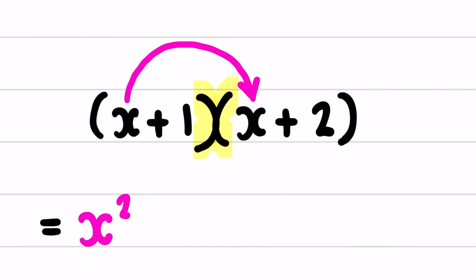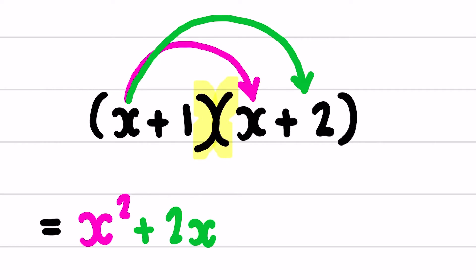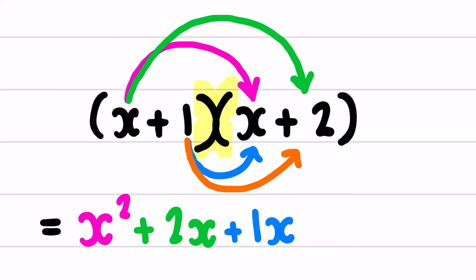Then outer times outer — the two terms furthest away from each other — which would be x and positive 2. Positive x times positive 2 is positive 2x. Inner times inner, the two terms closest to each other, which would be the 1 and the x. 1 times x is positive 1x. And last times last: positive 1 times positive 2 is positive 2.